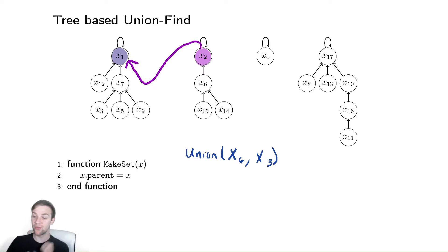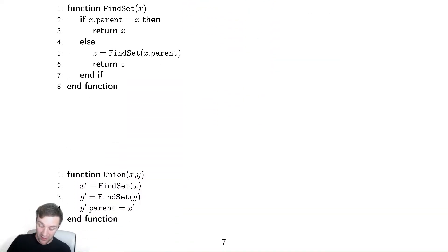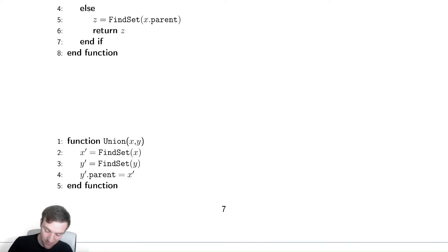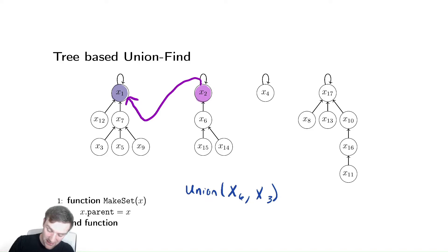Let's look at the code for union before we move on. So union, it's very straightforward. Step one, find the set for x. Step two, find the set for y. Step three, set the parent of y prime to be x prime. So that's the step where you set the pointer to be x1.